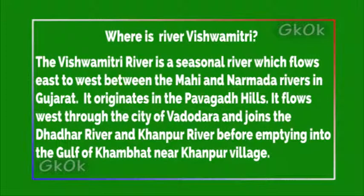Where is the River Vishwamitri? The River Vishwamitri is a seasonal river which flows east to west between the Mahi and Narmada rivers in Gujarat. It originates in the Pavagadh hills and flows west through the city of Vadodara, joining the Dhadar river and Kanpur river before emptying into the Gulf of Khambhat near Kanpur village.